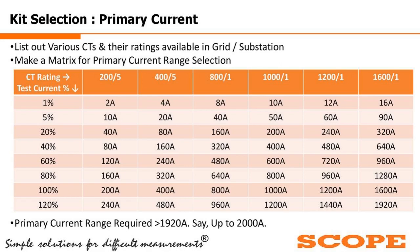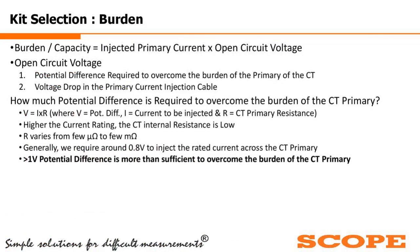In some cases — about 10% — CT ratings are 2000A or 2400A; for those cases a 3000A instrument can be selected. These are the combinations we can choose. For kit selection, two major doubts are: what is the burden or capacity, and what open circuit voltage is needed? The basic formula is: V = I × R, where V is the potential difference, I is the primary current injected, and R is the CT primary resistance. The open circuit voltage is simply the voltage drop needed to overcome the burden of the CT primary.